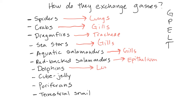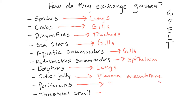Dolphins — lungs. Cube jelly — just directly through its cells. Peripherens as well. For a terrestrial snail, it turns out snails are divided into two groups: some use lungs, some use gills. Some spiders also use trachea in addition to book lungs, but just for purposes of this class, they all have lungs — by decree.